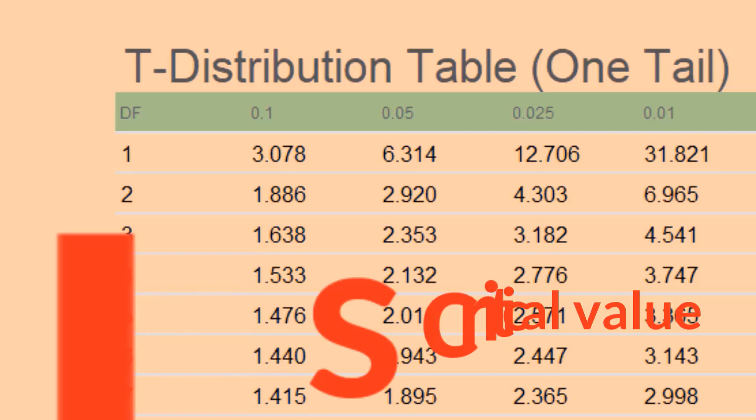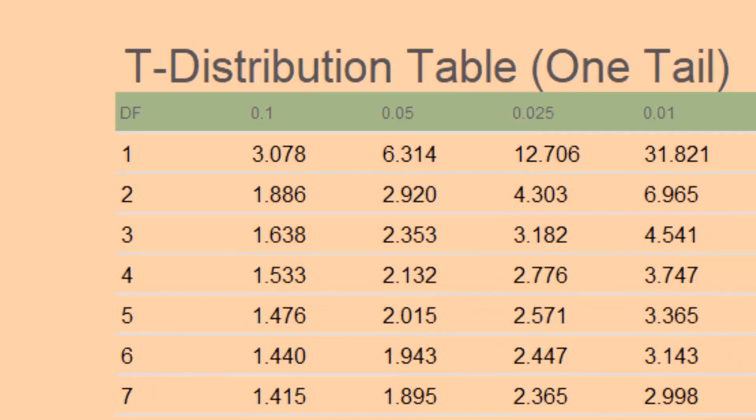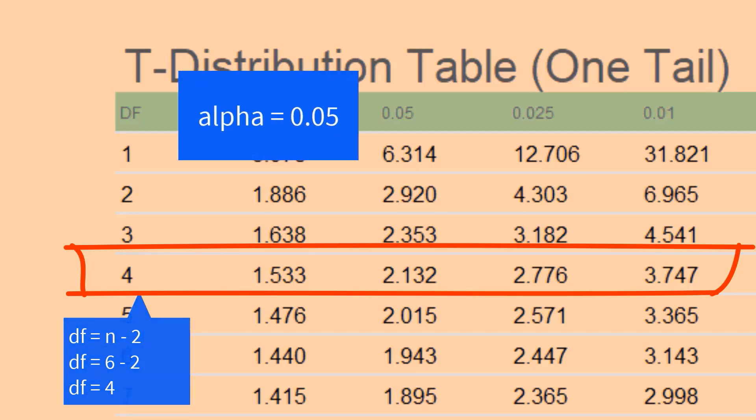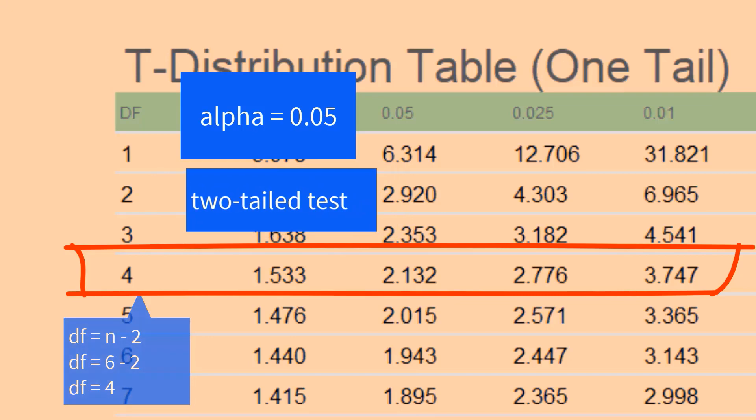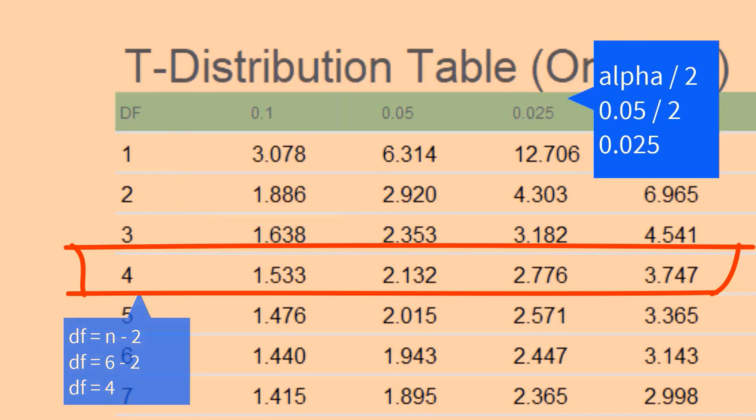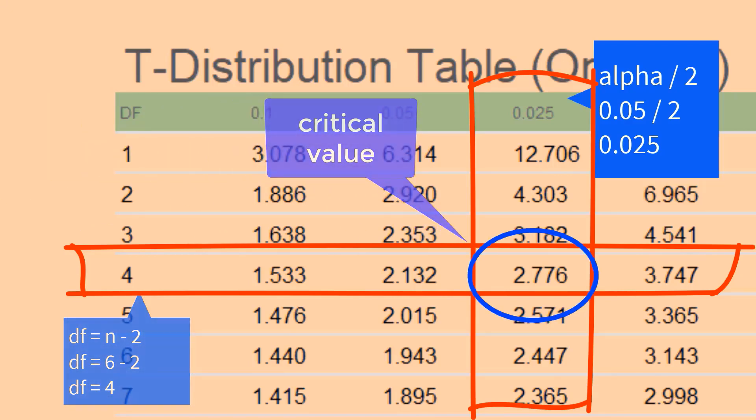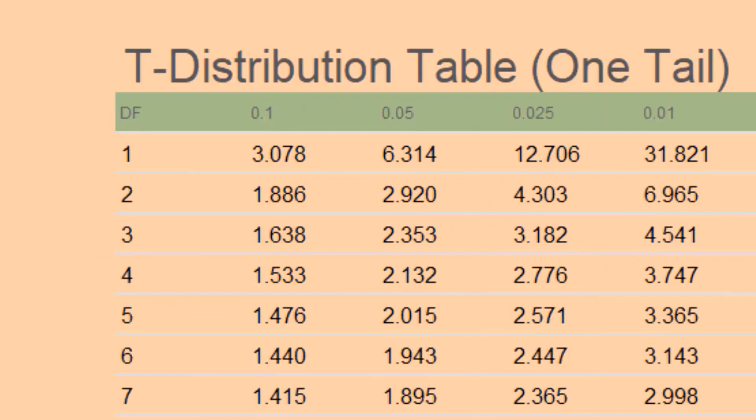To get the critical value, we will use the table of t distribution. Sample size 6 minus 2 equals 4 degrees of freedom. We will use level of significance or alpha of 0.05. Judging from the null hypothesis, this is a two-tailed test, so we will divide 0.05 by 2. Under column 0.025, we get critical value of 2.776.